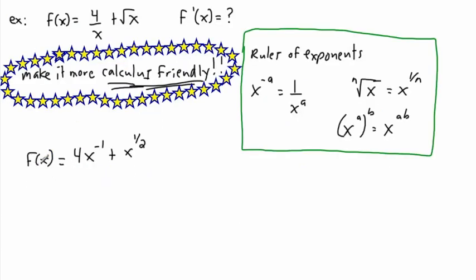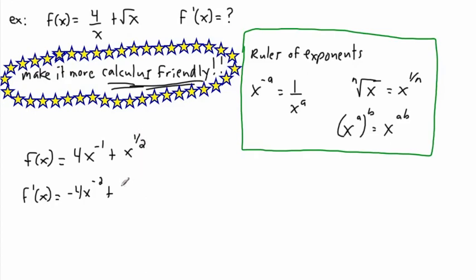So I rewrote f of x, and it's really important to label what you're doing properly so your teacher or someone else can follow along — it's also just good practice. Now I'm ready to do f prime of x. Using the trick: negative 1 is the exponent, so I bring it in front. Negative 1 times 4 gives me negative 4, times x to the power of negative 1 minus 1. Plus: I take the 1/2 and put it in front, giving 1/2 times x to the power of 1/2 minus 1.